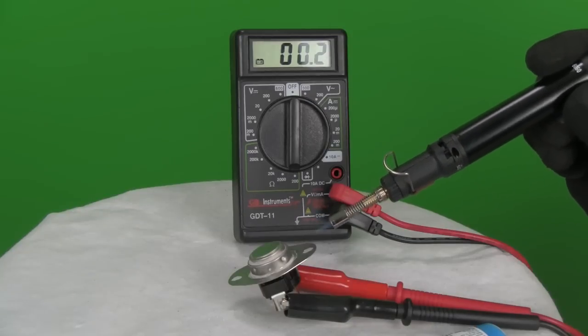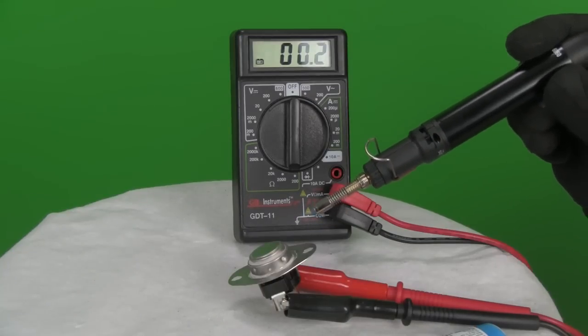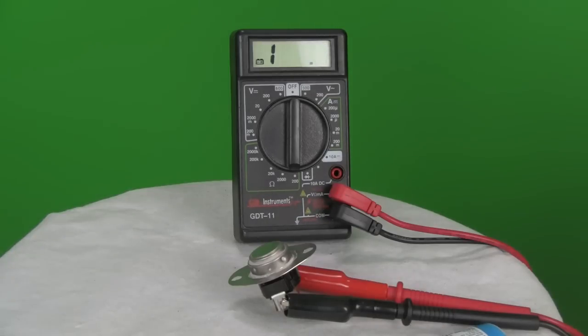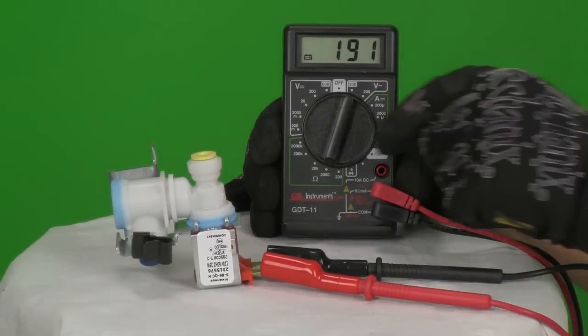If a coil offers infinite resistance, it's probably defective and needs replacement. If a bi-metal thermostat or fuse offers infinite resistance when it should be closed, it needs replacement. Let's test a few things so you can get the hang of it.